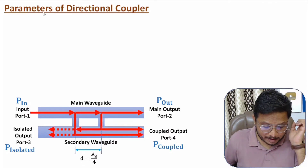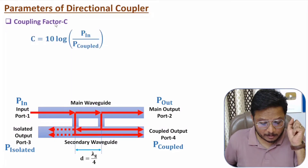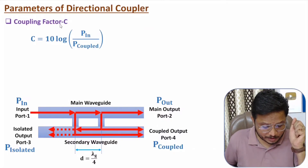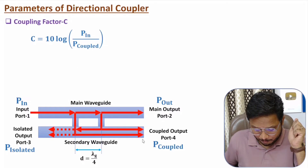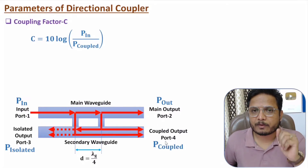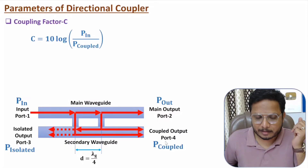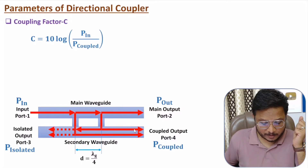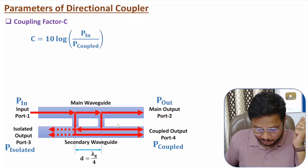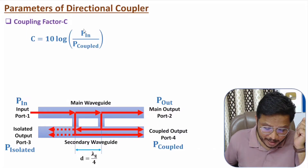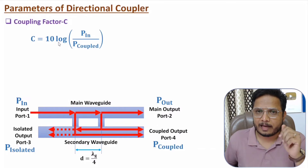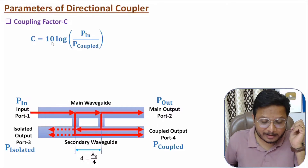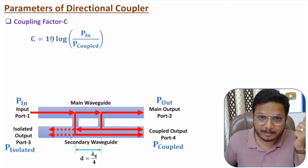The first parameter is coupling factor, which is the ratio of P-in to P-coupled. For example, with a 3 dB directional coupler, half of the input power gets coupled — if 1 watt is inserted, half a watt is coupled. This ratio is calculated in decibels: when data is in the form of power, 10-log is used; when in the form of voltage, 20-log is used.